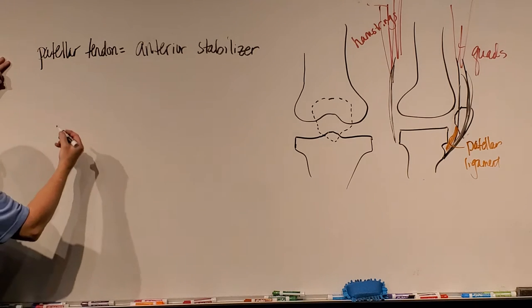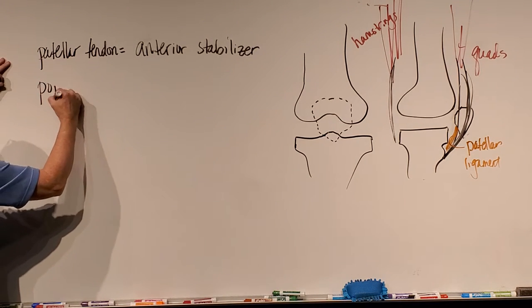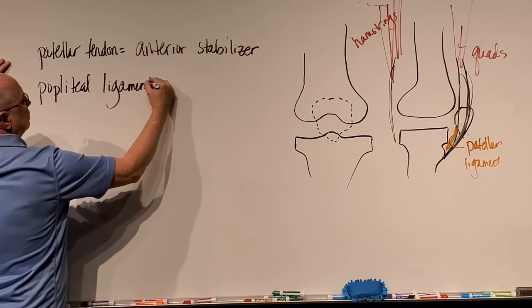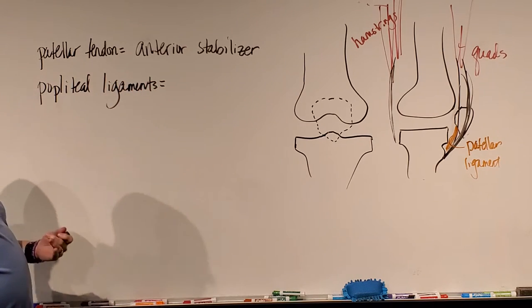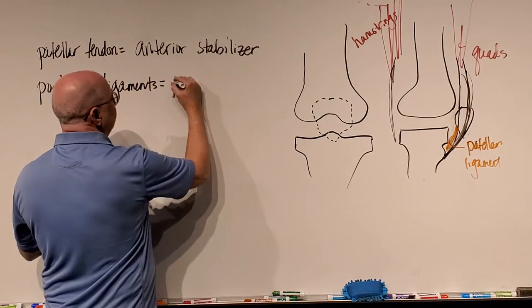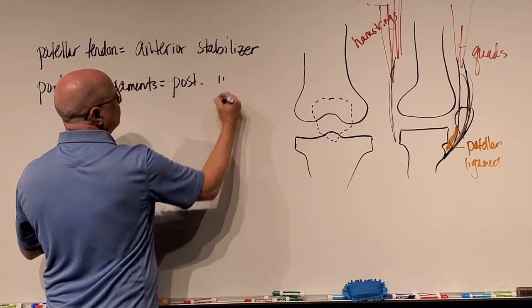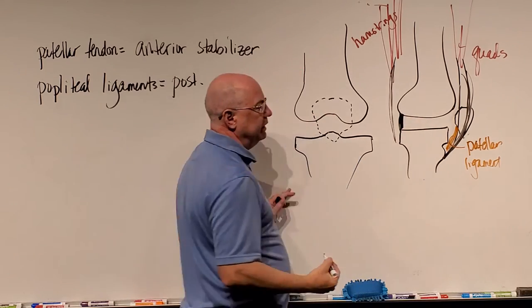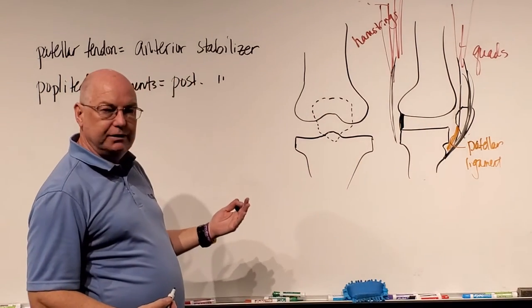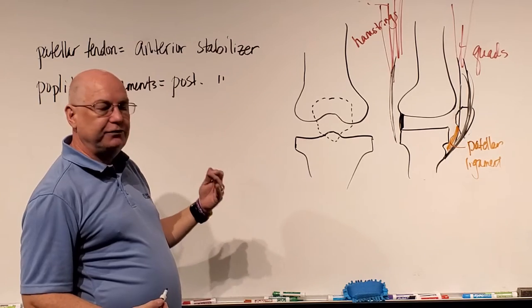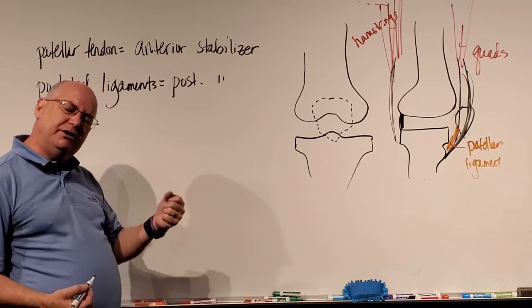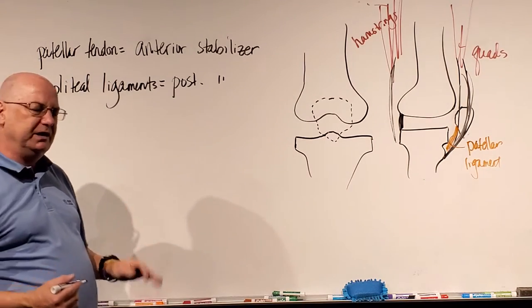On the posterior surface of the knee there are what are called the popliteal or popliteal ligaments. The popliteal ligaments are posterior stabilizers. There's one that connects from the femur to the tibia and there's one that connects from the femur to the fibula. They're very tiny ligaments and they do a little bit of posterior stabilization but not a lot.